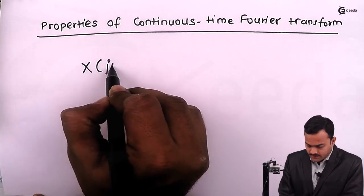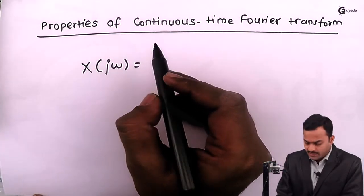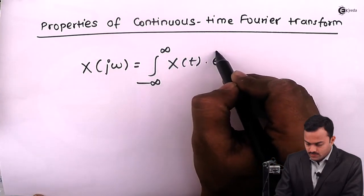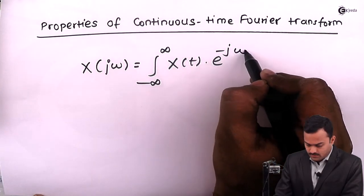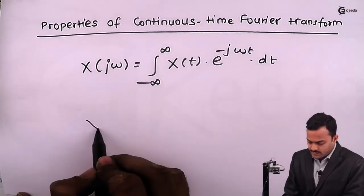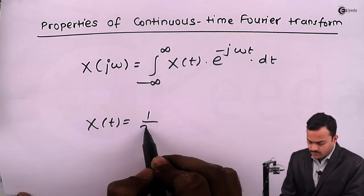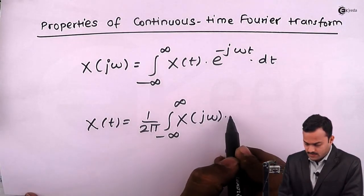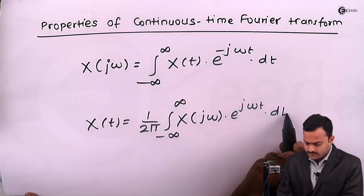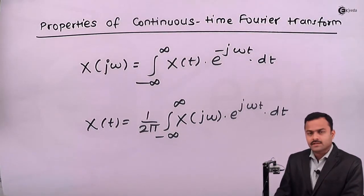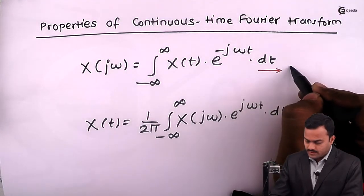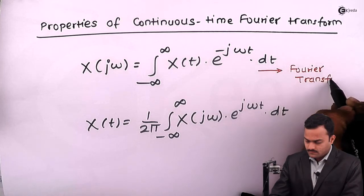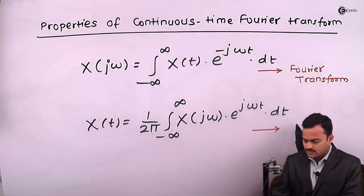The Fourier transform is given by X of jω = integral from minus infinity to infinity of x(t) e raised to minus jωt dt. And the inverse Fourier transform is x(t) = 1 upon 2π integral from minus infinity to infinity of X(jω) e raised to jωt dω. The first equation is the Fourier transform and the second equation is the inverse Fourier transform.